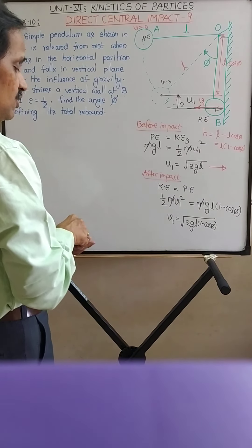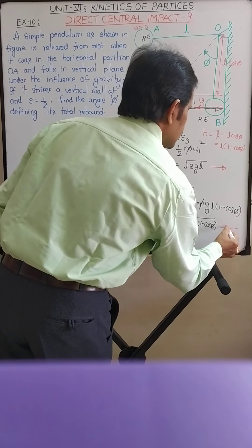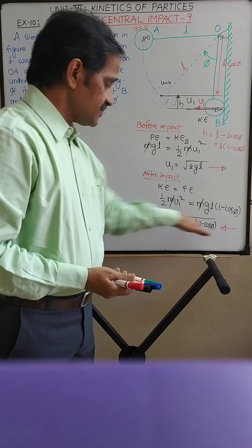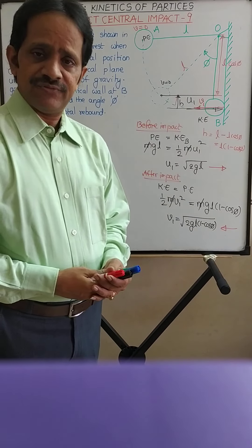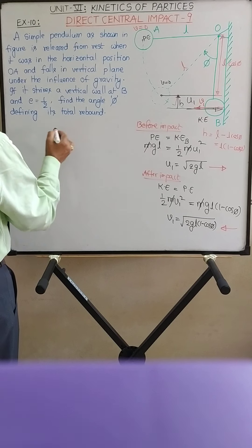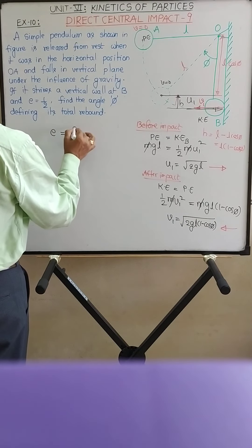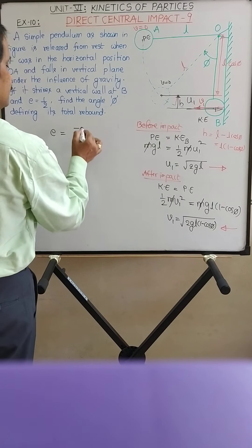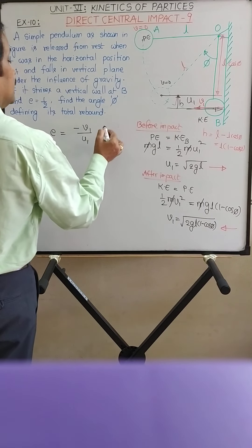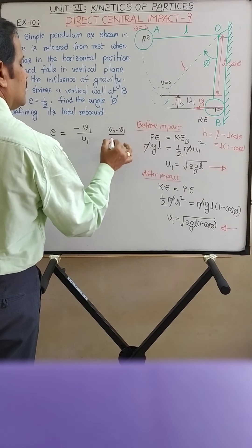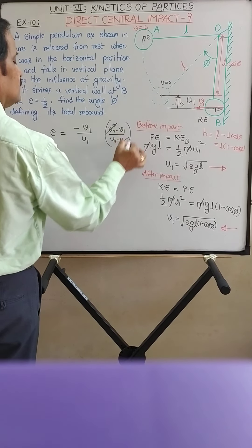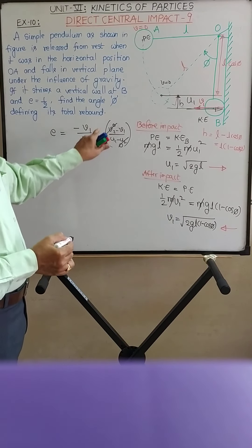The direction of velocity V1 is towards the left, while before impact the velocity was towards the right. The coefficient of restitution formula for impact with a body of large mass is e = −V1/U1, derived from (V2 − V1)/(U1 − U2), where V2 = 0 and U2 = 0. Taking rightward as positive and leftward as negative, the formula reduces to e = −V1/U1.